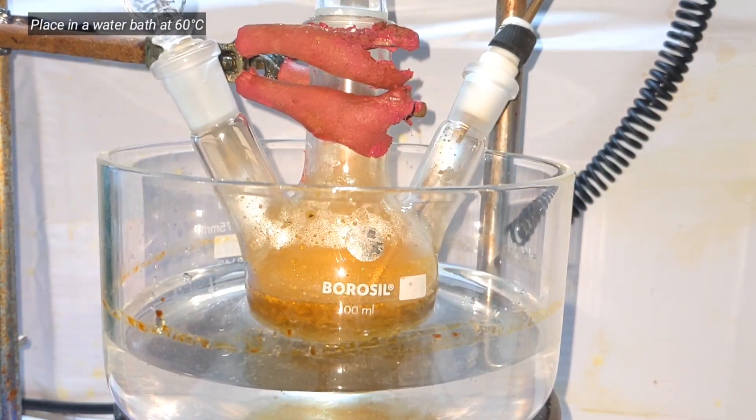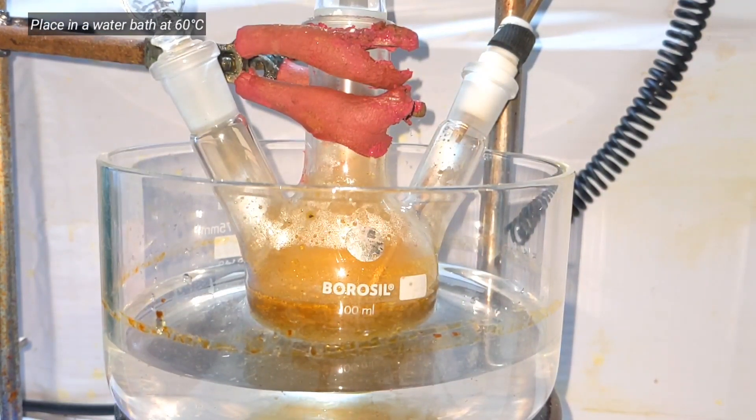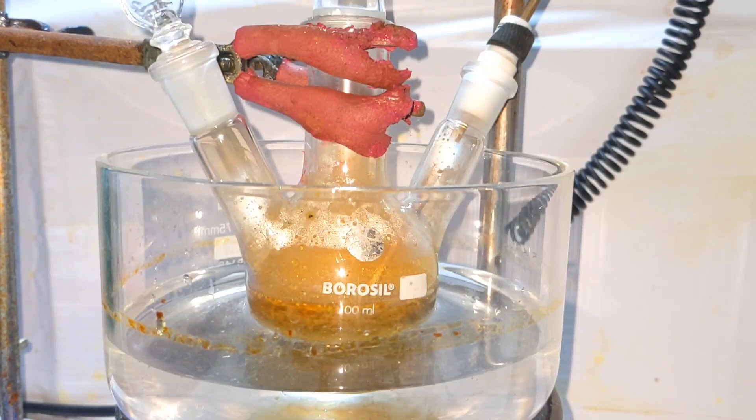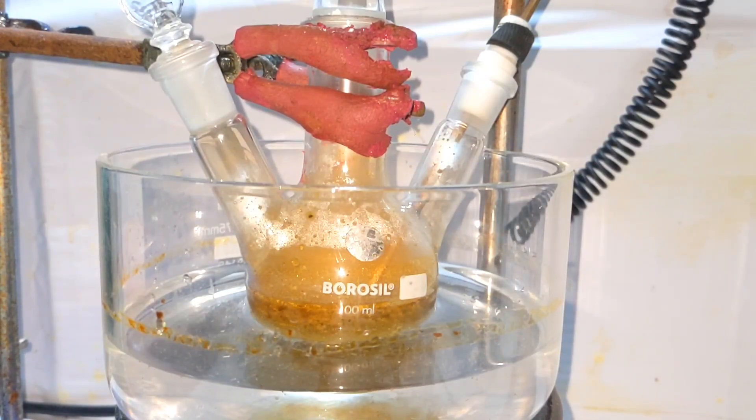The reaction mixture was then placed in a water bath and heated to 60 degrees Celsius. A beautiful color change from dark red to a yellow golden color is obtained. I couldn't capture the video because I was busy trying to arrange the water baths during that time.